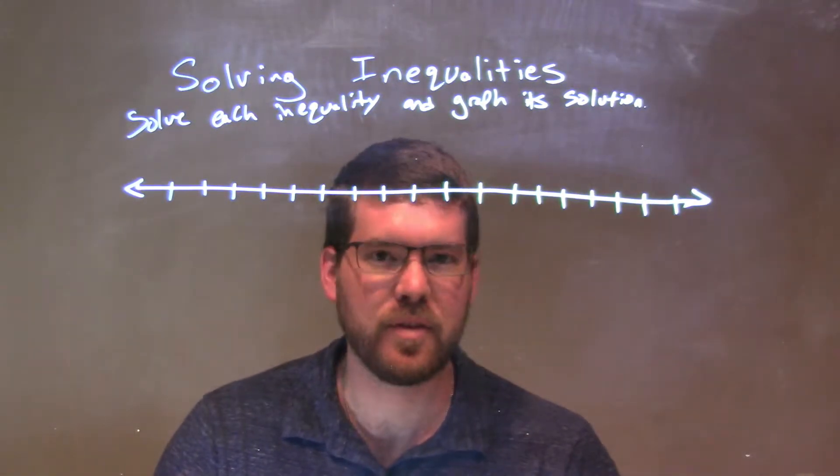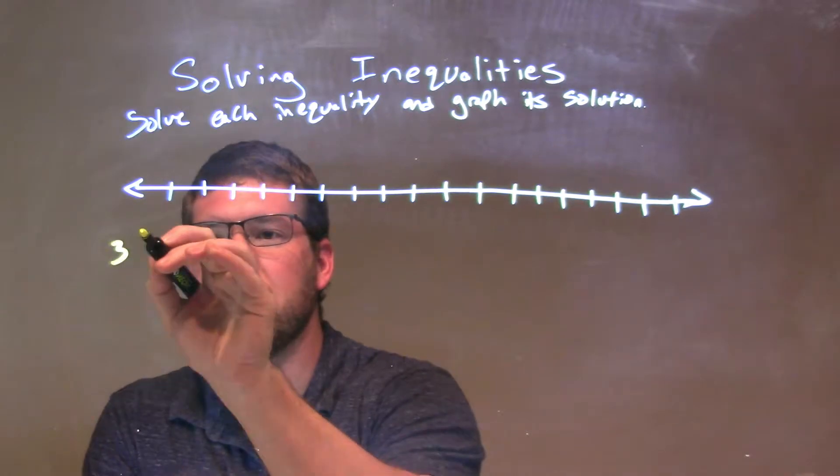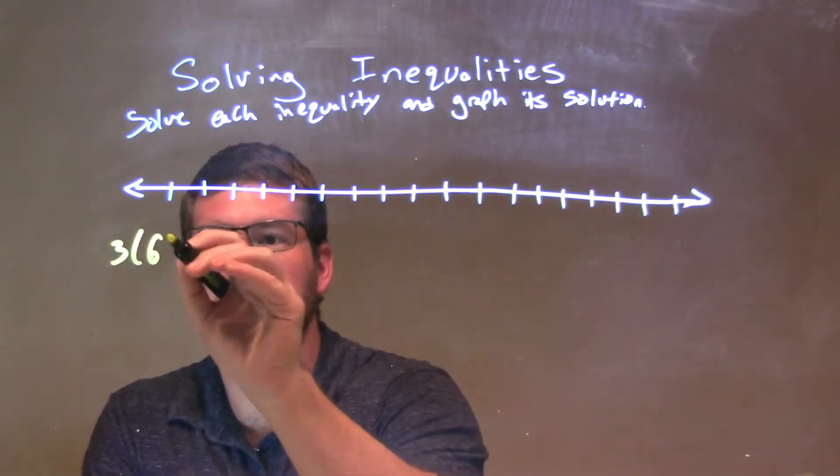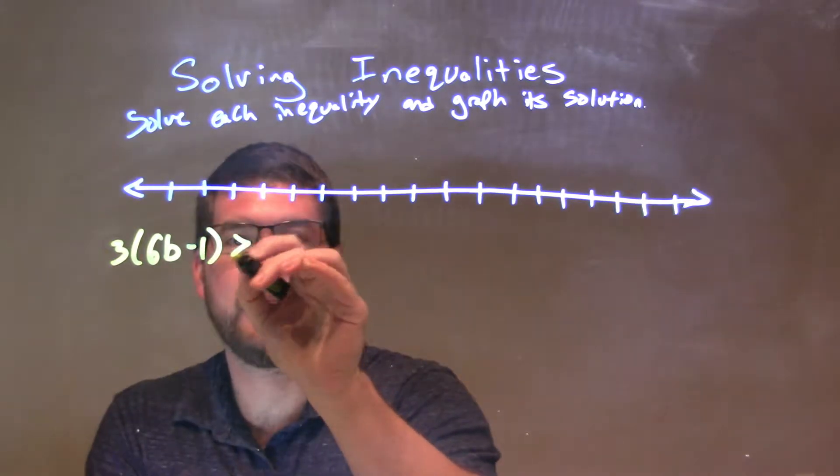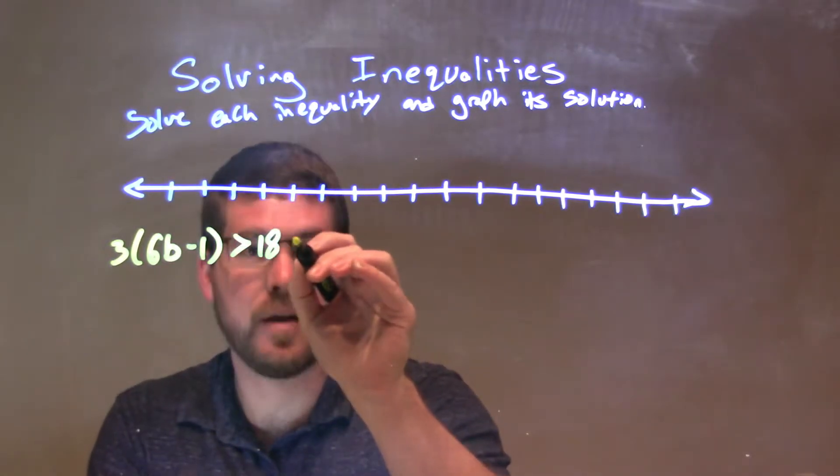We're going to solve each inequality and graph its solution. I was given this, and I call it 3 times 6b minus 1, and it's greater than 18 minus 3b.